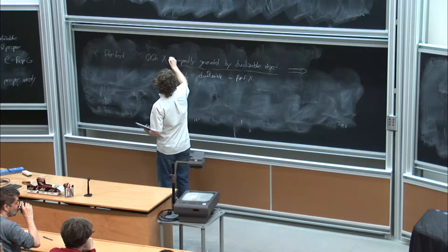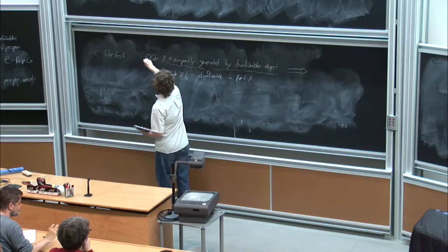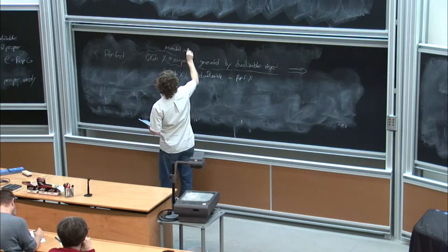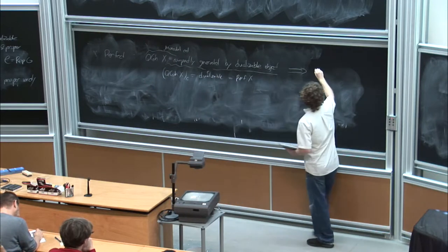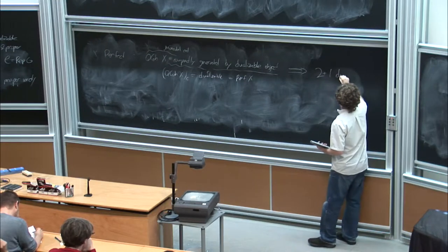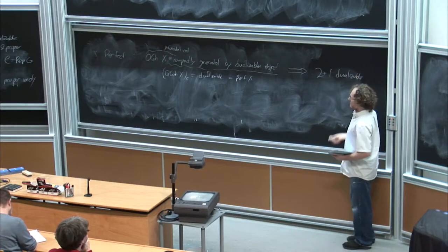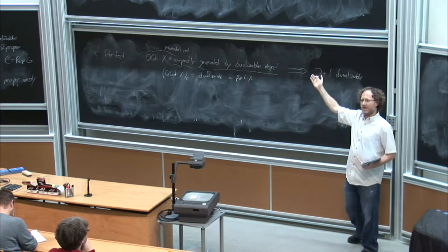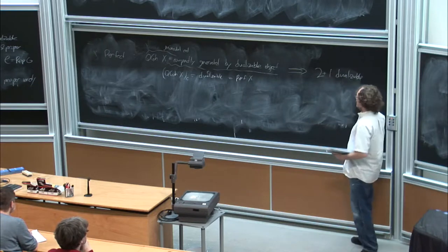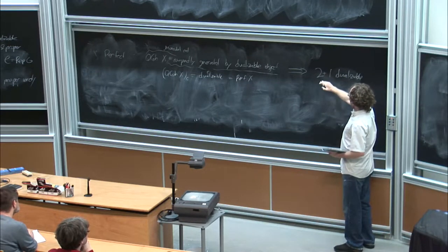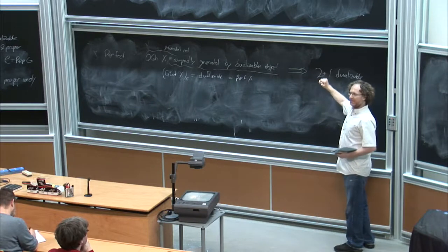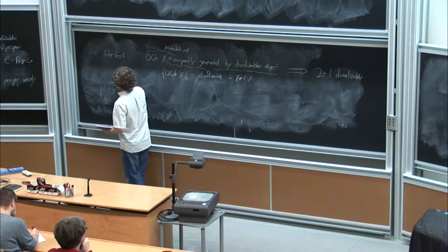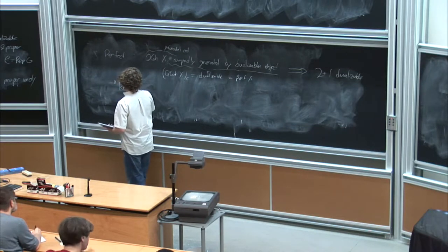This property of being compactly generated is a version of rigidity — some version of the category being a rigid category. And this property automatically guarantees that if I think of this as a monoidal category, thinking of this as a special kind of two-category, this is automatically two plus one dualizable. So what does this mean? I can define a field theory — a three-dimensional field theory — that gives all the way up to vector spaces attached to two-manifolds. And this field theory is what I'd like to call Rosansky-Witten theory in quotation marks.